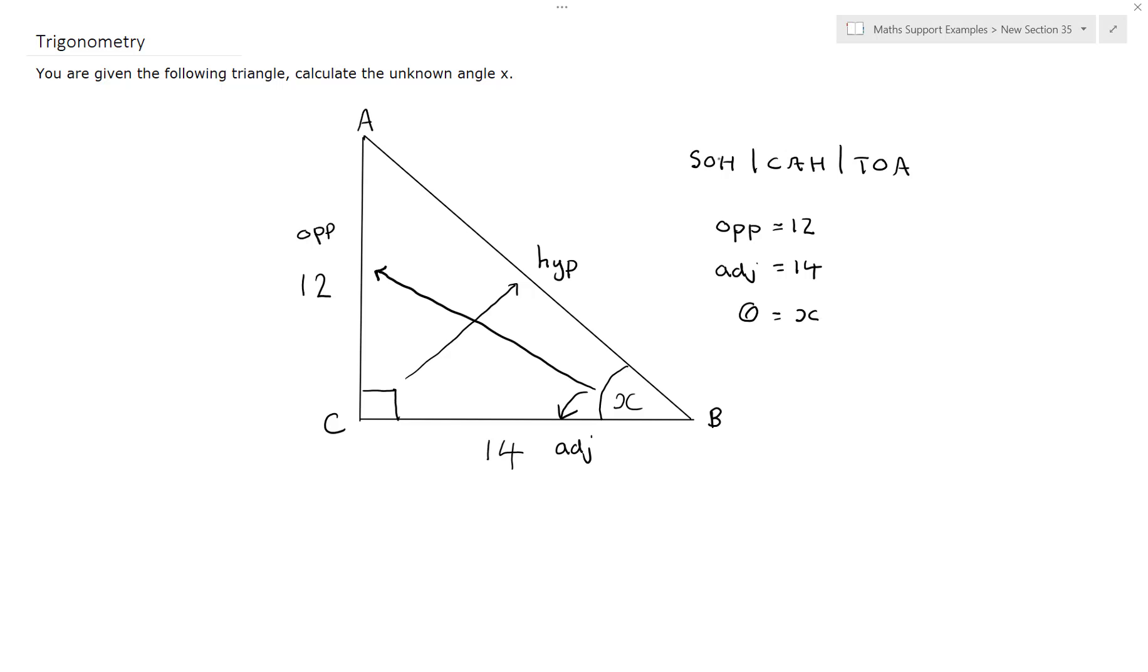Remember the S-O-H tells us that sin theta is opposite over hypotenuse. The C-A-H tells us that cos theta is the adjacent over the hypotenuse. And the T-O-A tells us that tan theta is opposite over adjacent.